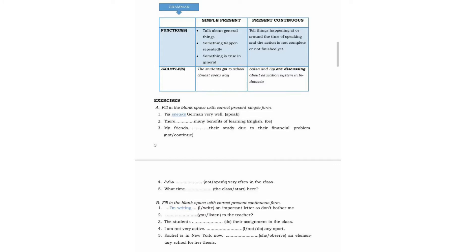Next, I want to explain simple present and present continuous tenses. Simple present talks about general things, something that happens repeatedly, or something that is true in general. Present continuous tells about things happening at or around the time of speaking, and the action is not complete or finished yet.